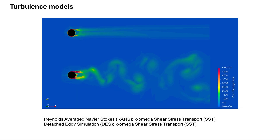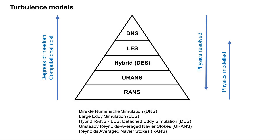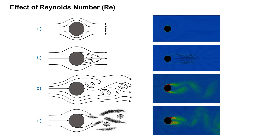Here is another comparison of vorticity between RANS and DES turbulence models. Here is an overview of turbulence models — you can see that from bottom to top the degrees of freedom increase and computational cost increases also. But the resolution of physics decreases from top to bottom. From a computational cost perspective in industry, the RANS method or hybrid RANS are more commonly used. I think DES has a good balance between computational cost and physics resolution. Summary of results: cases A, B, C, D and associated vorticity.